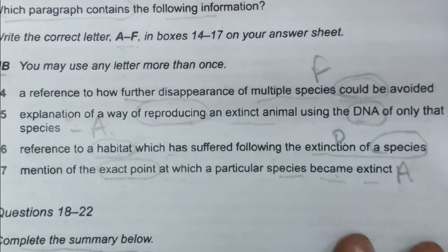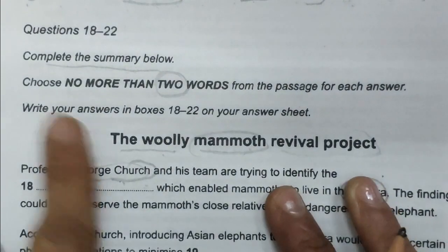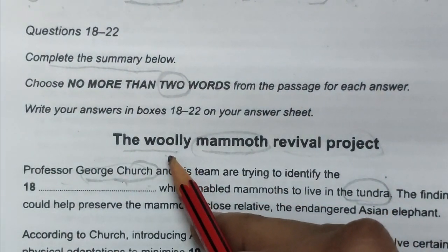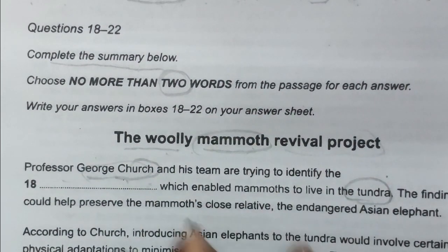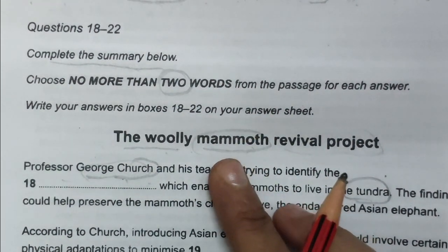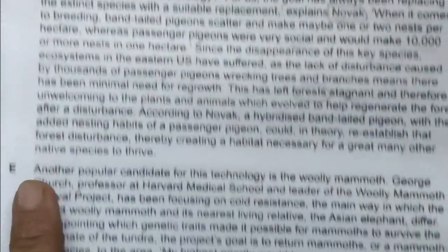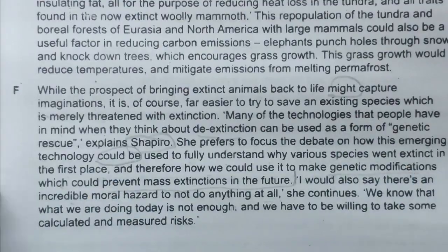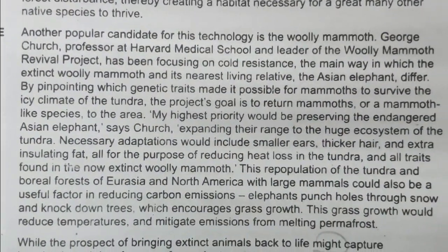So the answers for questions 14 to 17 are: Q14 is F, Q15 is A, Q16 is D, and Q17 is A. We have gone through Paragraphs A, B, C, D, and F — only Paragraph E is left. Let's find the location of the next set of questions (18–22) in Paragraph E.